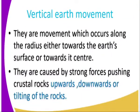Then we go to the second type of Earth movement, which is the Vertical Earth Movement. These are movements which occur along the radius — and when we talk about along the radius, it can be either towards the Earth's surface or towards its center, so either upward or downward movement.